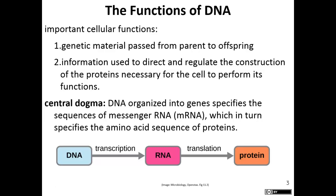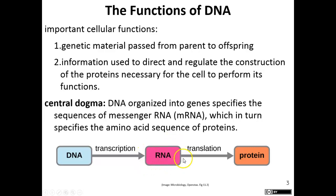The central dogma of biology is that DNA is organized into genes, and these genes can be transcribed into what we call RNA. The specific type we're talking about is called messenger RNA, or mRNA. This mRNA can then be translated into a functional protein.